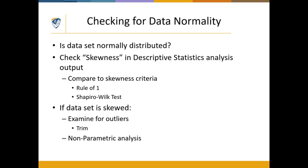If we want to be more stringent, we can use formal normality tests like the Shapiro-Wilk. But for the most part, most people use the rule of one, especially if we're working with research that's not particularly high stakes and we have random sampling — we can be pretty assured that most of our data will be normally distributed.